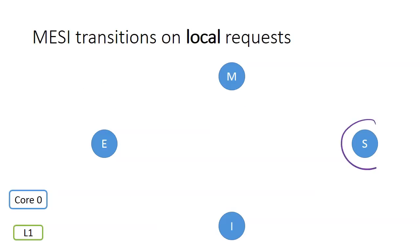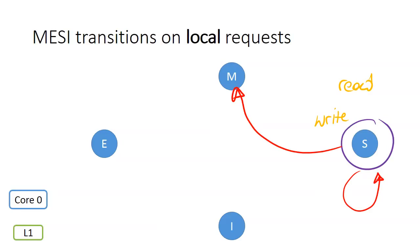If the cache line is in the shared state and the core wants to read the data, as with the exclusive state, no transition is needed and the cache line remains in the shared state. However, if we want to write on the data, we need a transition to the modified state, and unlike the exclusive state, the core needs to send coherence messages to invalidate the other shared copies of this data on the other cores.